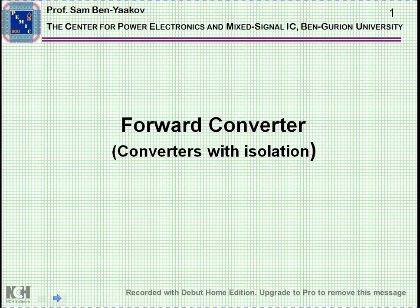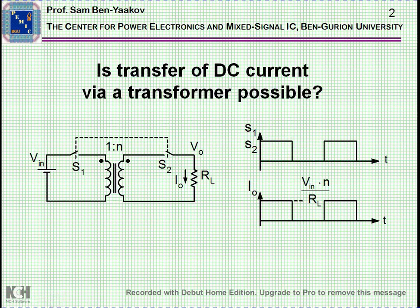The forward converter belongs to the family of converters with isolation, which are very useful when connecting to the power line. Before starting, let me clear out some very important points. There is this intuitive feeling that there is no way to transfer DC current through a transformer — the feeling is that the transformer is an AC device, so the signal has to be AC at the input and AC at the output.